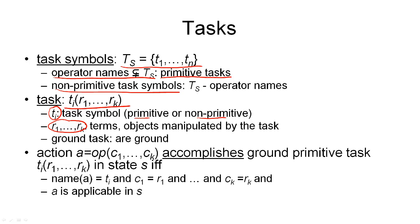This is very similar to the way we've defined operator names, and that is not a coincidence. Similarly, we define ground tasks as all those tasks for which all parameters are ground — meaning they are actual objects and not variables. A ground operator was called an action, but we don't have a special name for ground tasks. This means we have four types of tasks: tasks can be primitive or non-primitive, and they can be ground or unground.